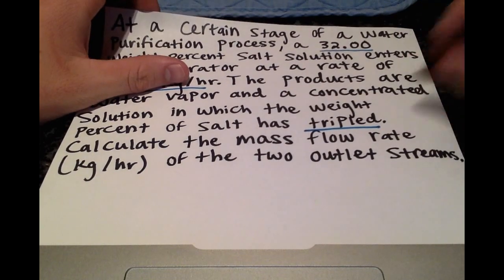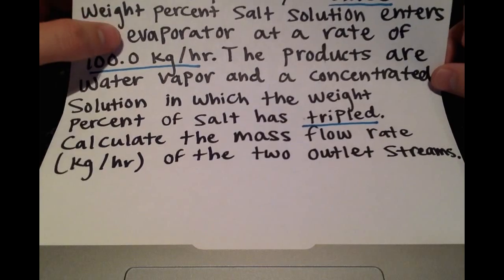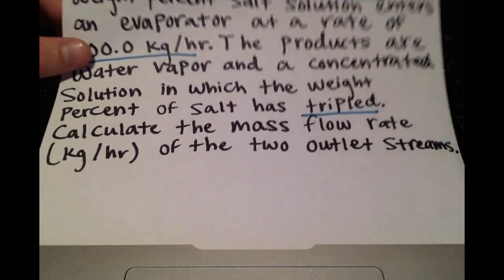Alright, so when drawing these mass flow rate processes, I would recommend getting a fresh sheet of paper so that you have plenty of room to work this out. So let's first just draw this out and write the information that's provided.